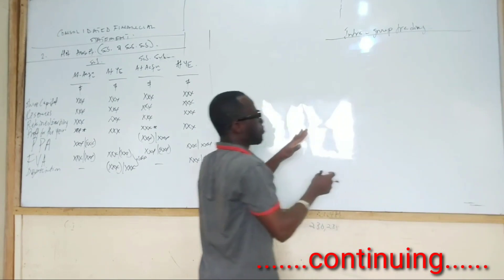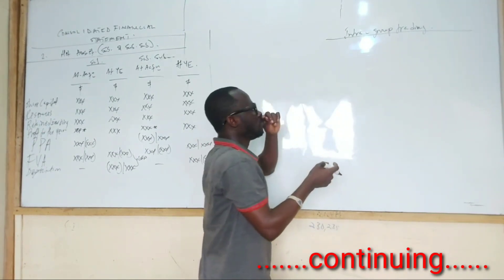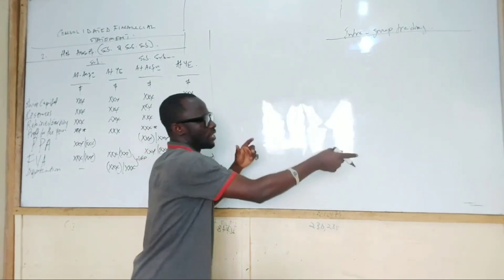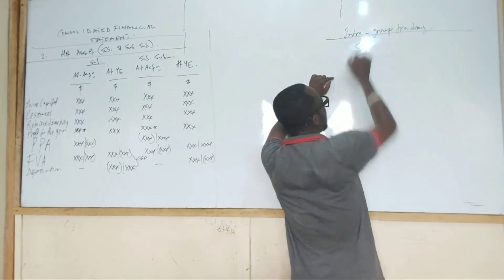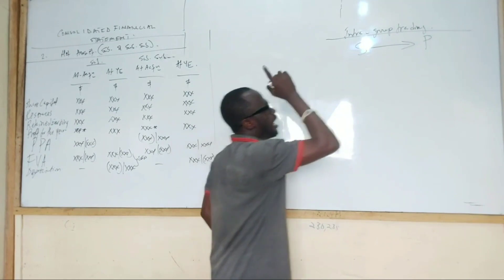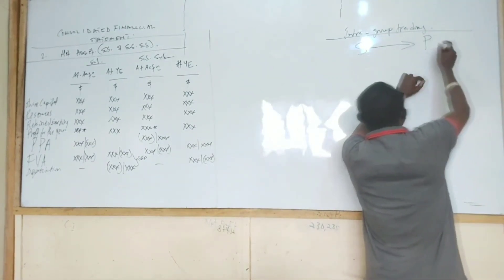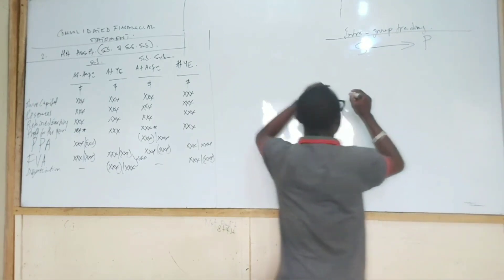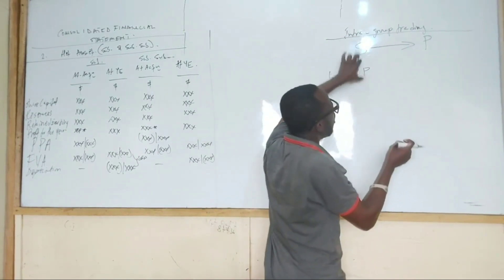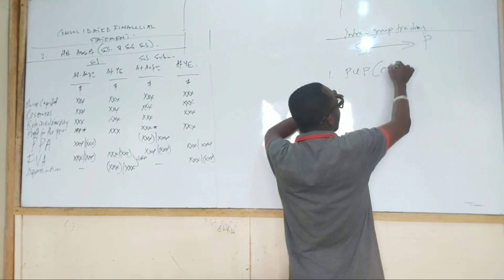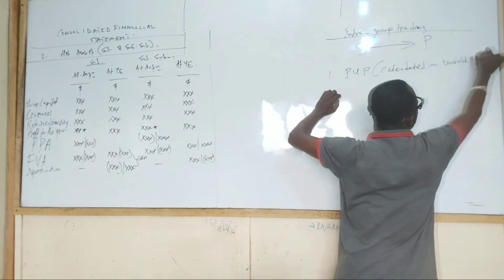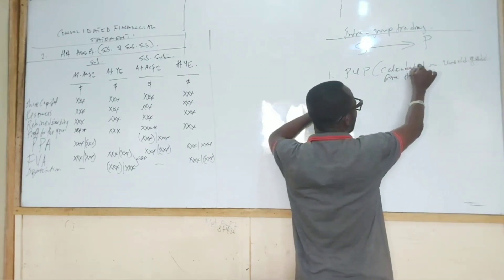When we talk about intragroup trading it could take two forms: one, somebody is selling an asset to another person, or somebody is selling goods to another person. If it is the subsidiary selling goods to the parent, and at the end of the year the parent still has some of the goods in store, then we need to calculate what we call provision for unrealized profit — always calculated on unsold goods from the related party.